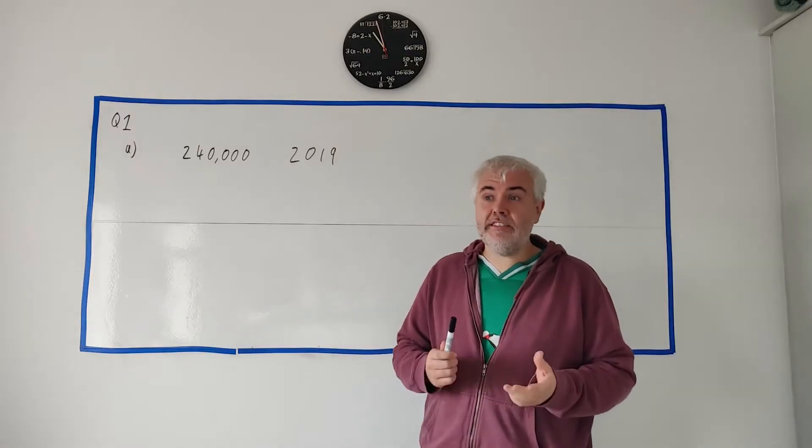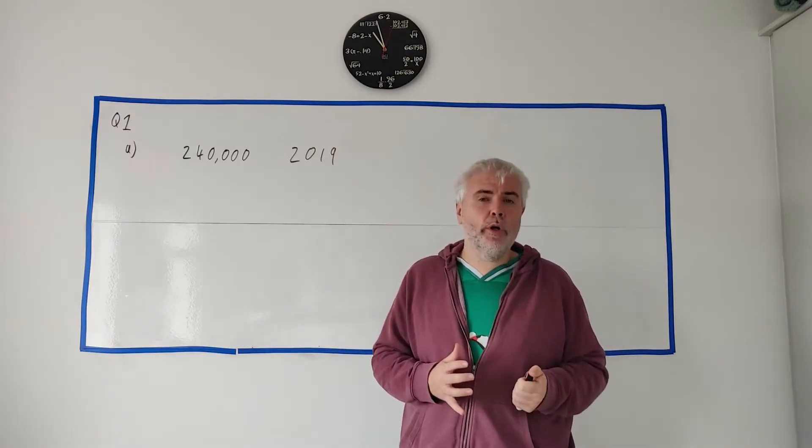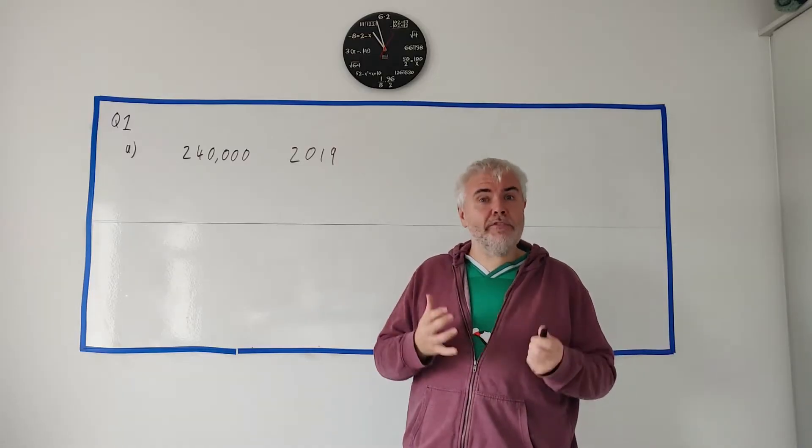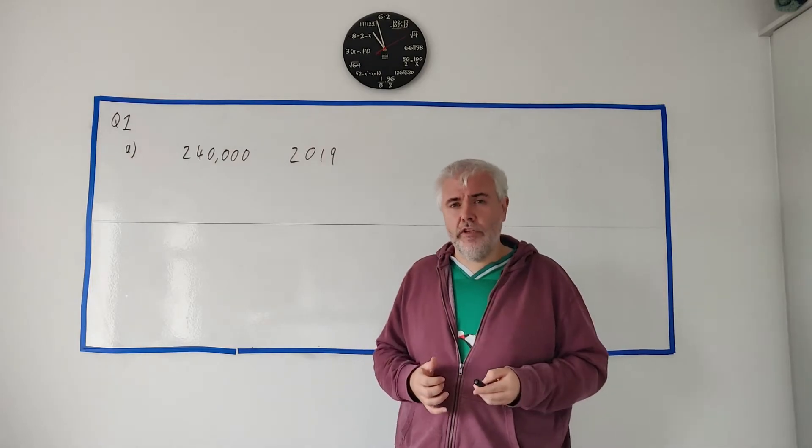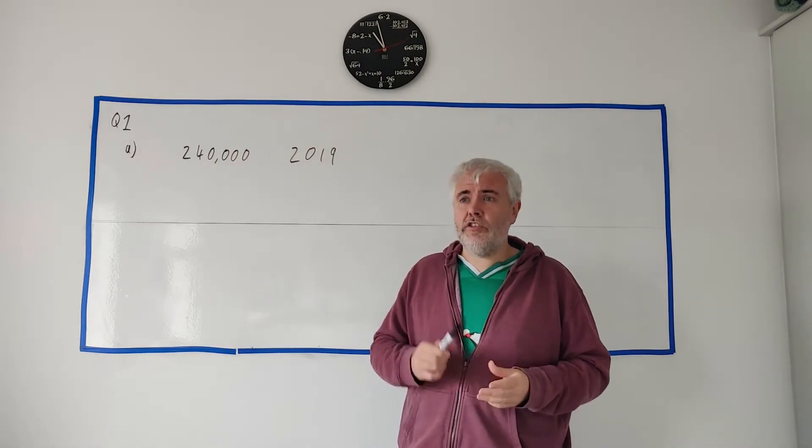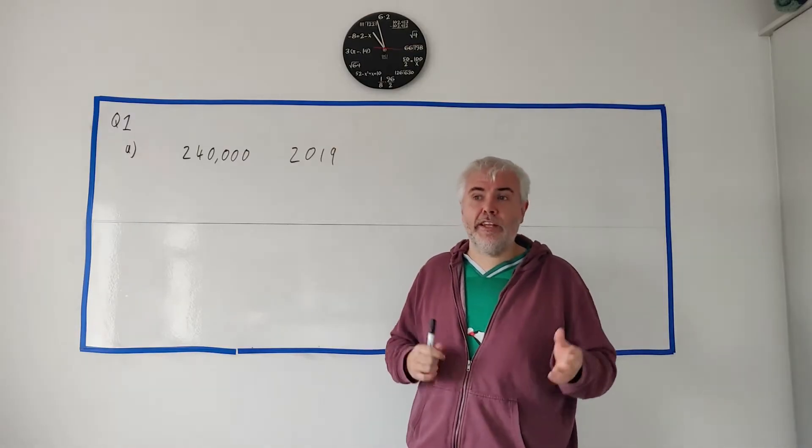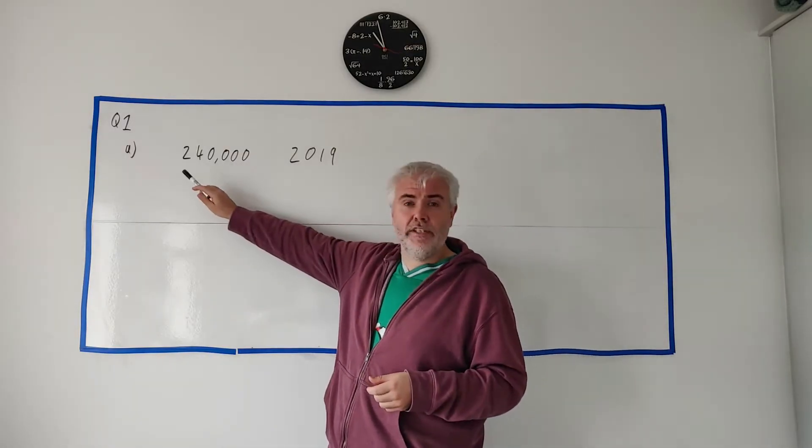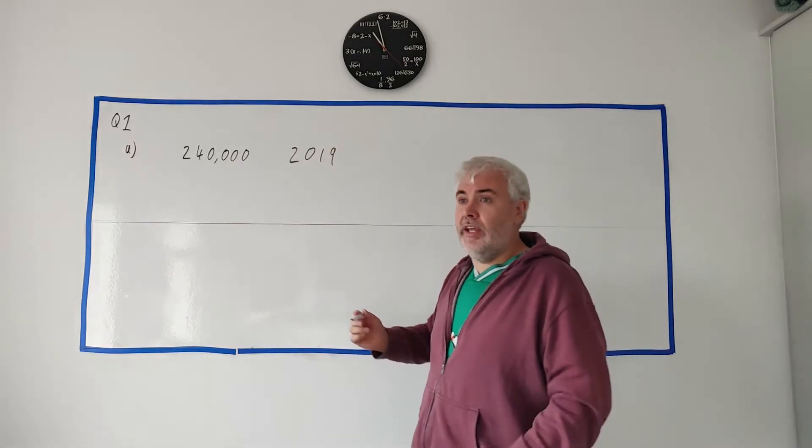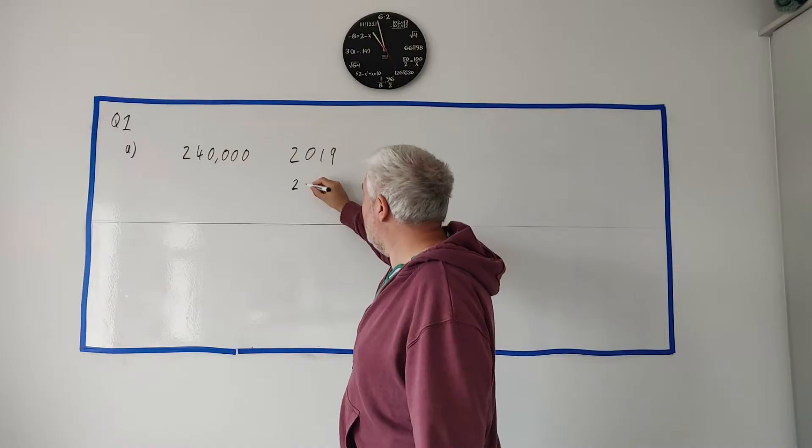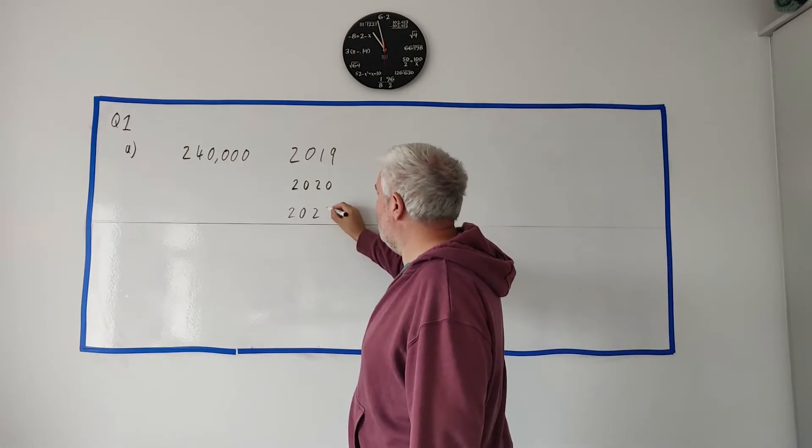The maths in question 1 isn't actually that difficult but it's a scary looking question. There's a lot of words in it and you have to read through that. Think of it as a story. The story of this question is about a house and the price of a house. It tells you the price of the house is 240,000 in 2019.